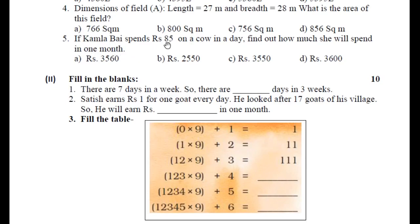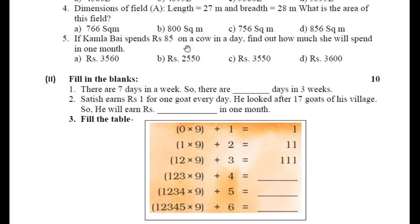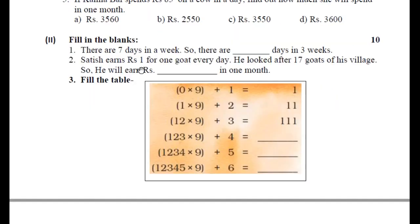Next: If Kamla spends 85 rupees on a cow in a day, how much will she spend in one month? Kamla एक दिन में cow पर 85 rupees spend करती है. One month में हम 30 days consider करते हैं, तो 30 का multiply कर दीजिए.